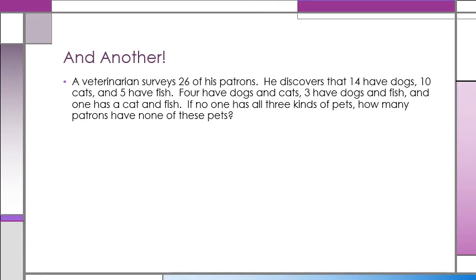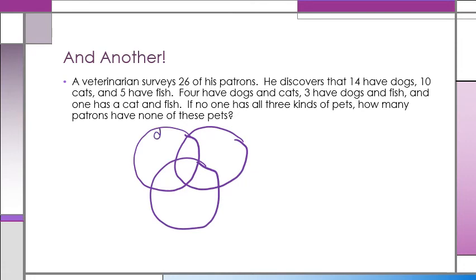Again, we can solve a problem using a Venn diagram. I have a veterinarian that surveys 26 of his patrons. He discovers that 14 have dogs, 10 cats, and 5 have fish. 4 have dogs and cats, 3 have dogs and fish, and 1 has a cat and a fish. If no one has all three kinds of pets, how many patrons have none?